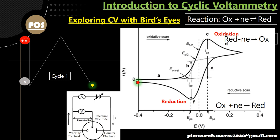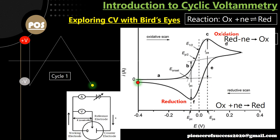In the reverse scan, the current rapidly changes and again reaches a maximum. The same concept applies: to carry out the reverse reaction (Ox + ne⁻ → Red), sufficient Ox must be present near the electrode. After the reverse peak, the electrode no longer has sufficient Ox due to diffusion resistance, so the reaction rate and current magnitude again reduce. This explains why you get two peaks in the voltammogram.